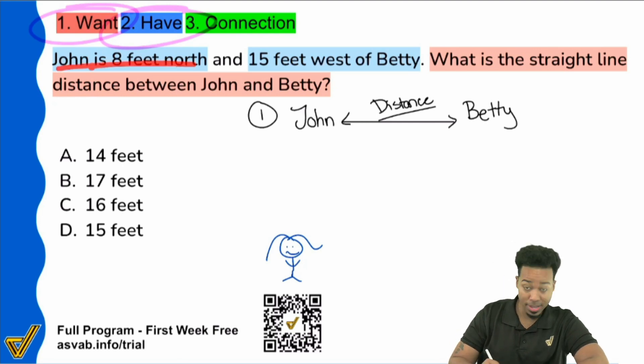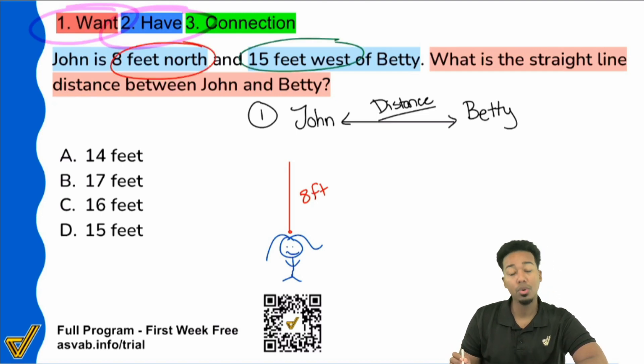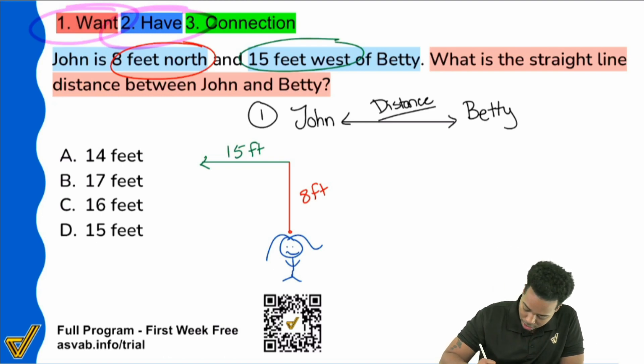Now it says that John is eight feet north. So from Betty, I'll go north, so up. We'll say eight feet north. And then I'll use green to write the 15 feet west. If you know how to read a compass, north would be up, and west would be to the left. So I'll do the 15 feet to the west. And that's where John would be. Let me draw John. Here's John, our buddy right here. So there it is.